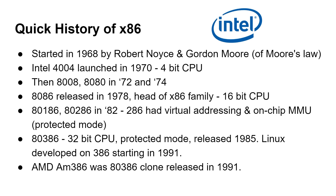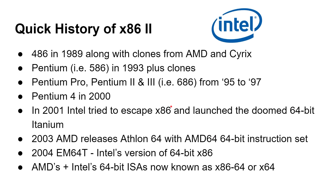Compaq put a 386 in their first one, and from there it became the standard processor for IBM clones, to the point that Linux was developed on a 386 starting in 1991. Also, there were clones of the chip itself — the AM386 was AMD's 386 clone, also released in 1991. There's a whole story on the clones, the lawsuits and all that, but that's not for this video. Then after the 386 came the 486, and after the 486 came the 586 — but that was called the Pentium because of copyright and trademarks.